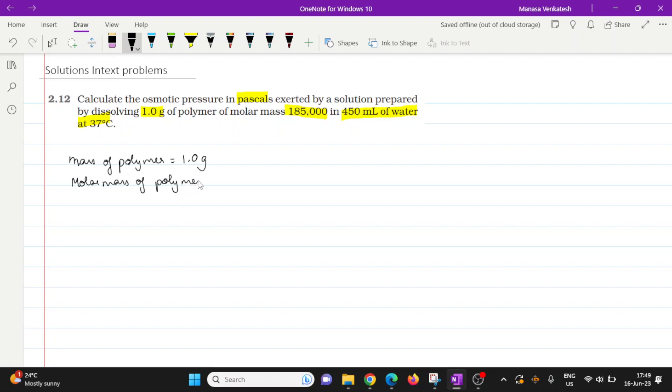We've been given molar mass of polymer equals 185,000, and we're going to obviously assume this is in grams per mole since it's molar mass. And then we've been given the volume of water which is equal to 450 ml.